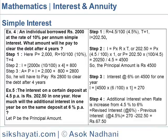An individual borrowed Rs.2000 at the rate of 10% per annum Simple Interest. What amount will he pay to clear the debt after 4 years? Here P = 2000, R = 10/100 = 10%, T = 4.